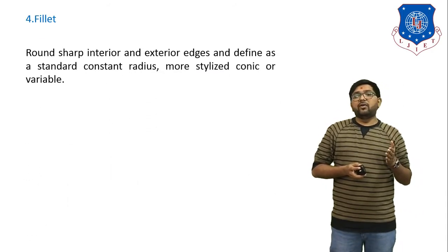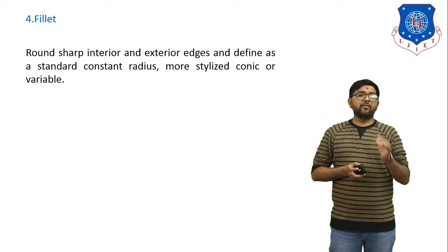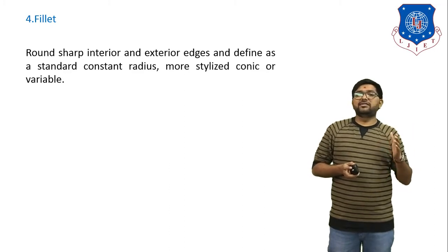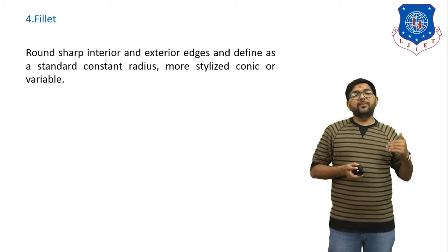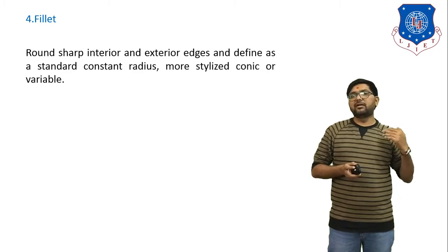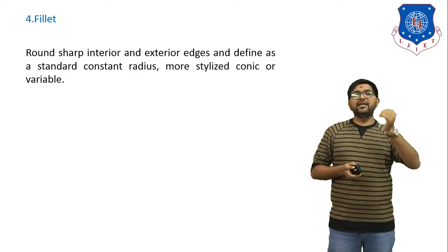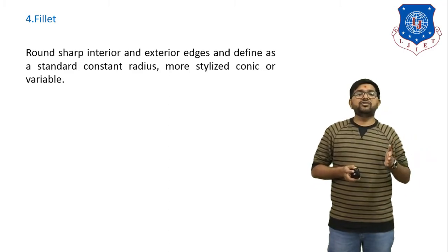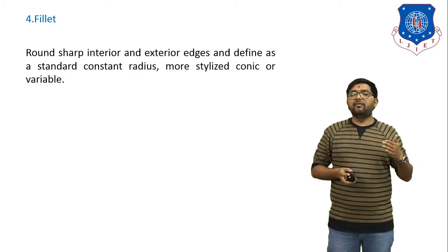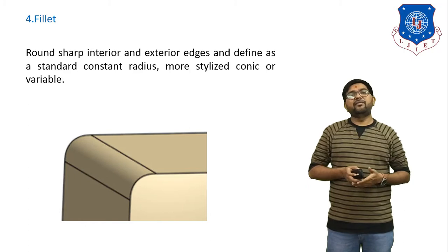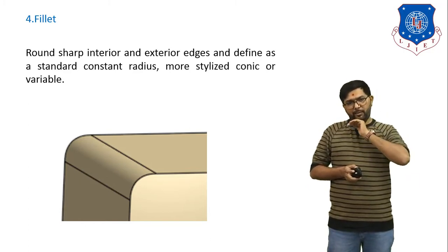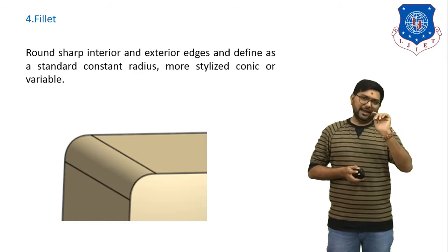Next is fillet. If we want to remove material from any edge in a round shape, that feature is called a fillet — it can be applied to interior or exterior edges. A fillet defines a standard constant radius, more stylish quality, or variable radius. In the figure, one cube is shown and from one edge of that cube material is removed in a round shape — that is the fillet.